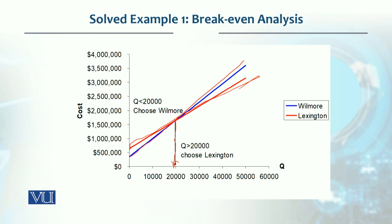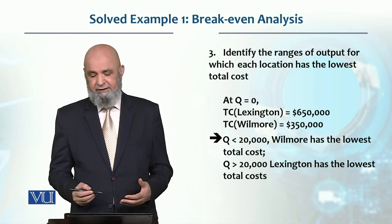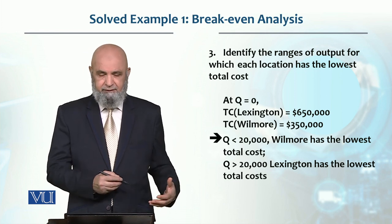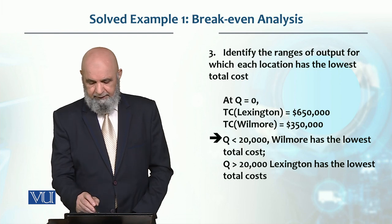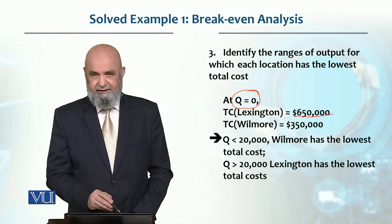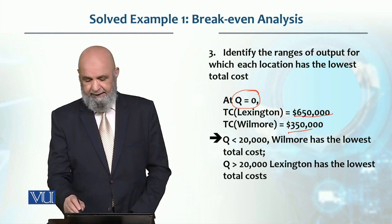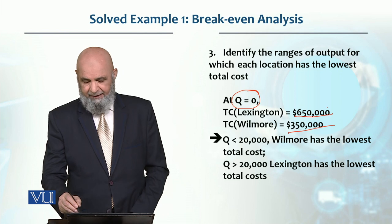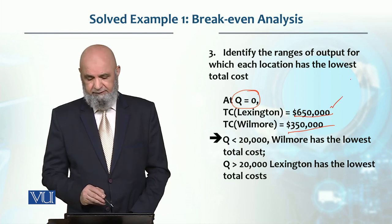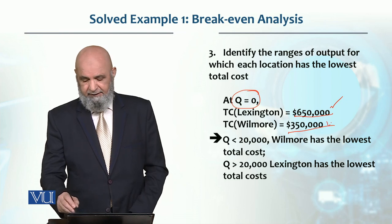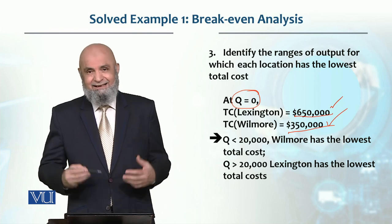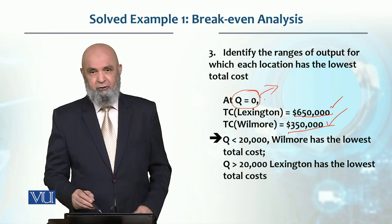If we take this into calculation, we need to identify the range of output for which each location gives the lowest cost. If we produce zero units, the cost for Lexington is $650,000 and for Wilmore the total cost is $350,000 — because $650,000 is the fixed cost for Lexington and $350,000 is the fixed cost for Wilmore, and fixed cost must be incurred even if we produce nothing.